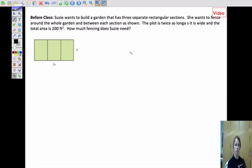All right? Before class, I'd like you guys to answer this question. Susie wants to build a garden that has three separate rectangular sections. She wants a fence around the whole garden and between each section as shown. The plot is twice as long as it is wide. There's a typo there. And the total area is 200 feet. How much fencing does Susie need? See if you can figure it out before class.